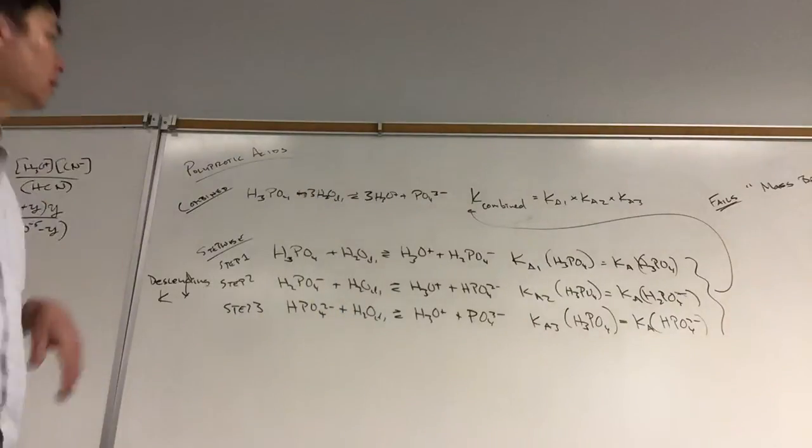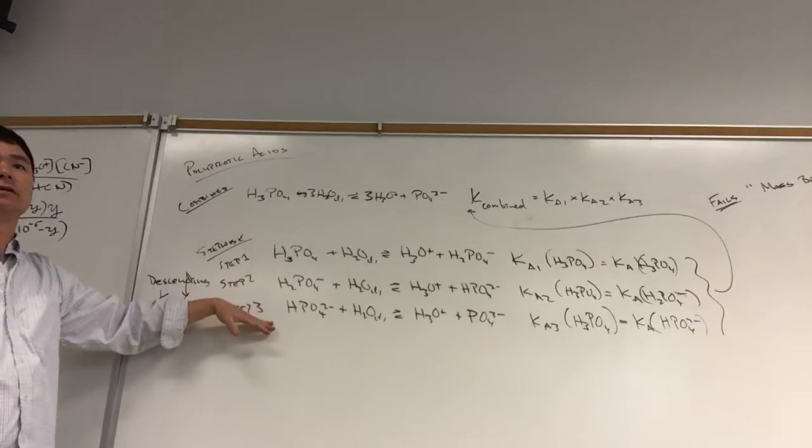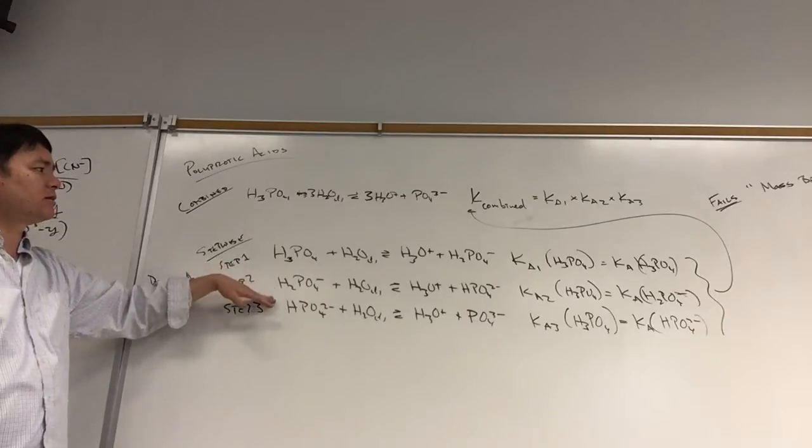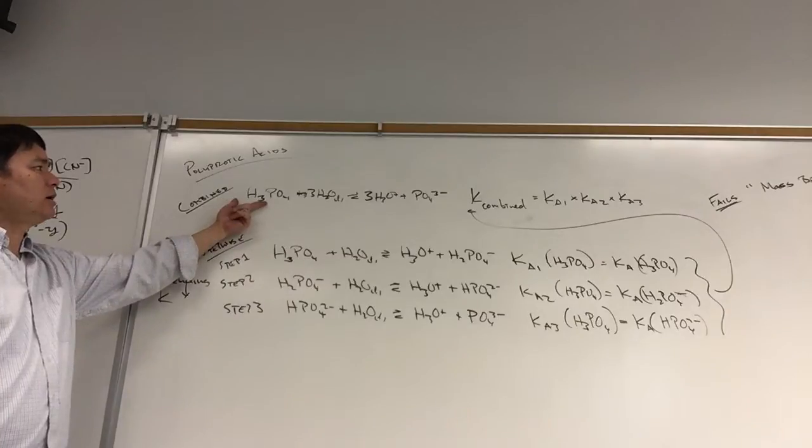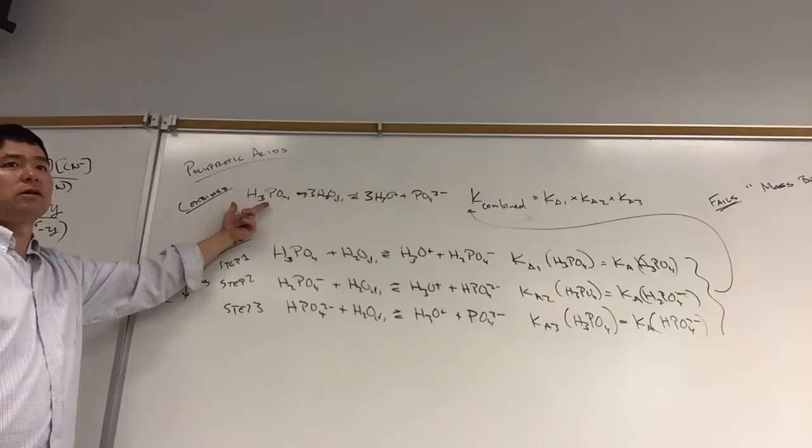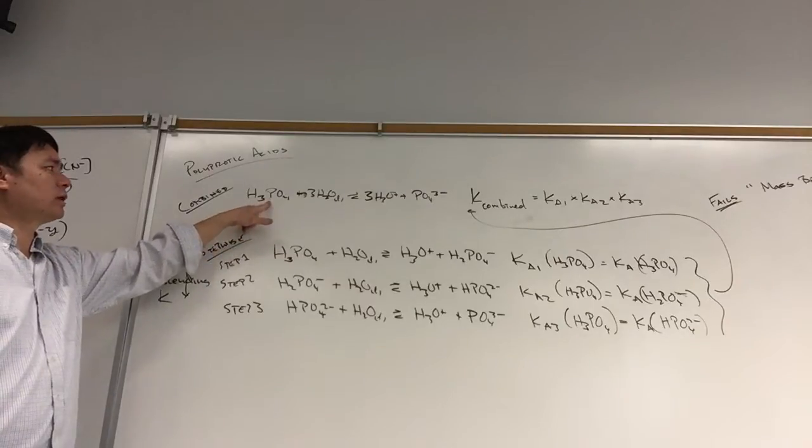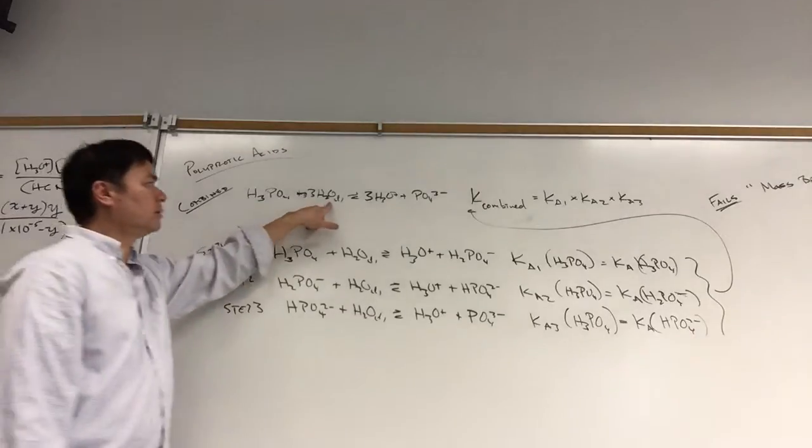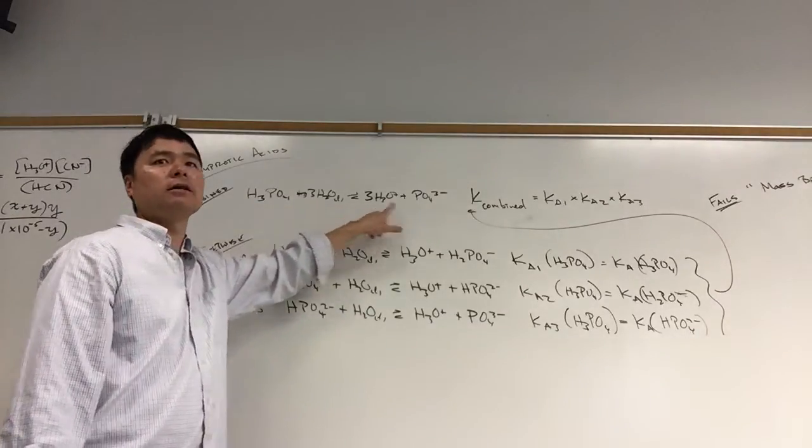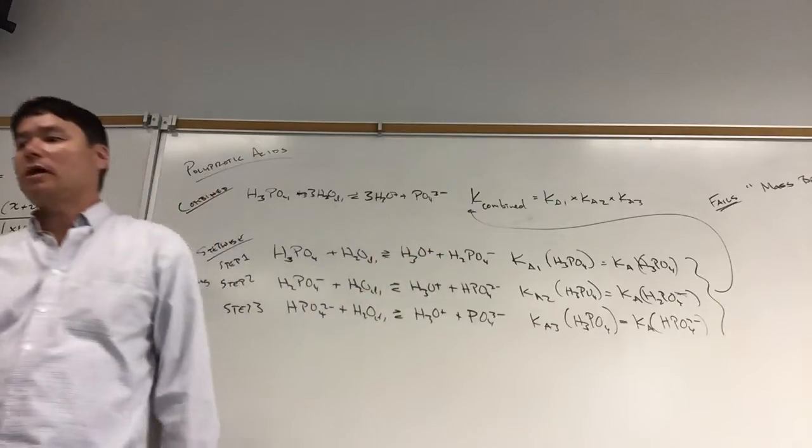All right, so getting back to the problem. We cannot combine these three equations. The reason we cannot combine these equations is because if we look at the combined equation, then this solution of phosphoric acid only contains four species: phosphoric acid molecules, water molecules, hydronium, and phosphate. But in reality we know that...